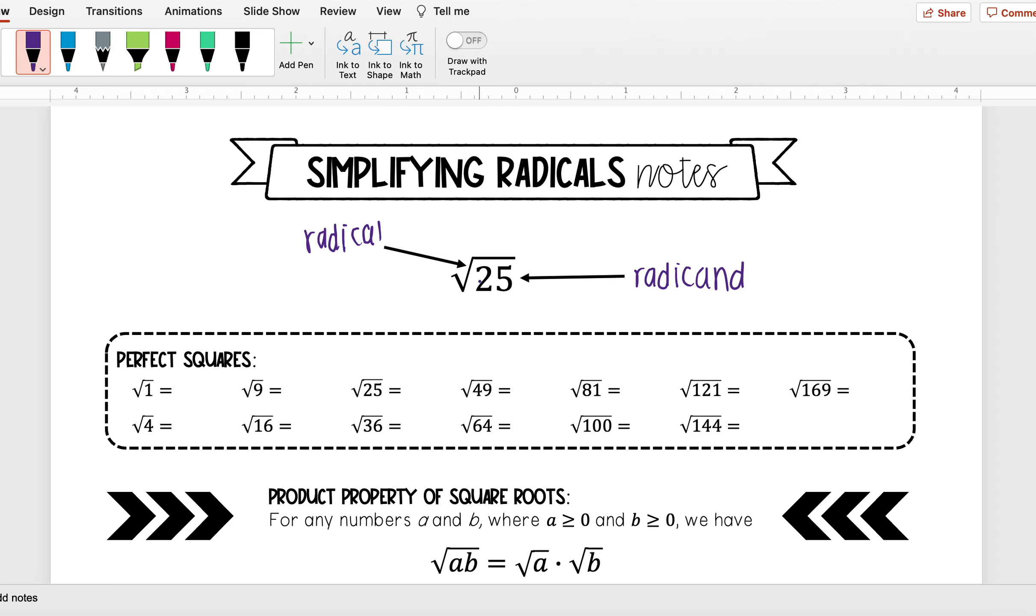It's important to remember with these square roots that we're really undoing a square. For instance, here I know that the square root of 25 equals 5, and that's because 5 squared equals 25. So I can think of taking the square root of 25 as being the same thing as taking the square root of 5 squared.